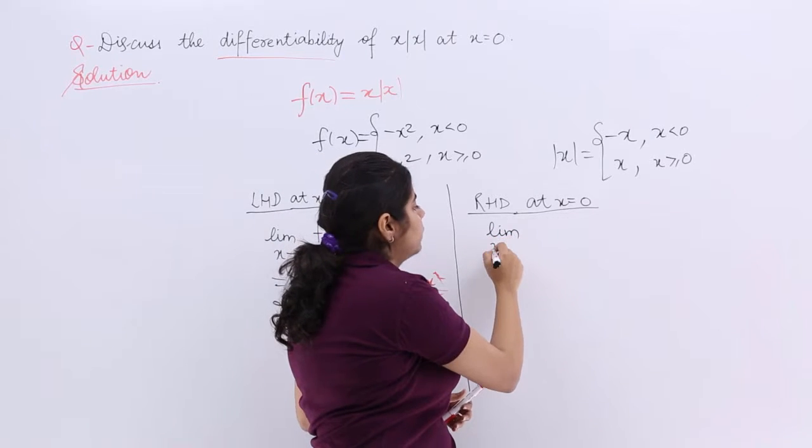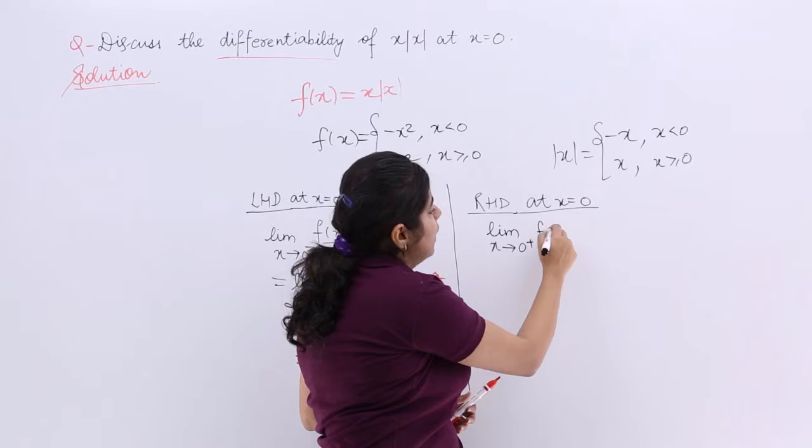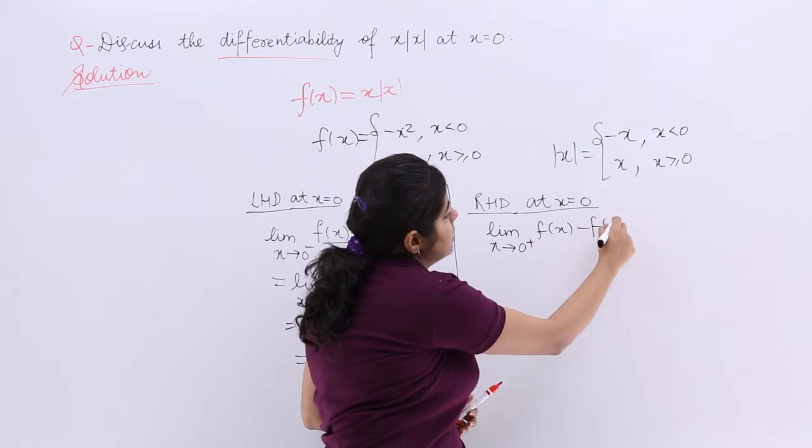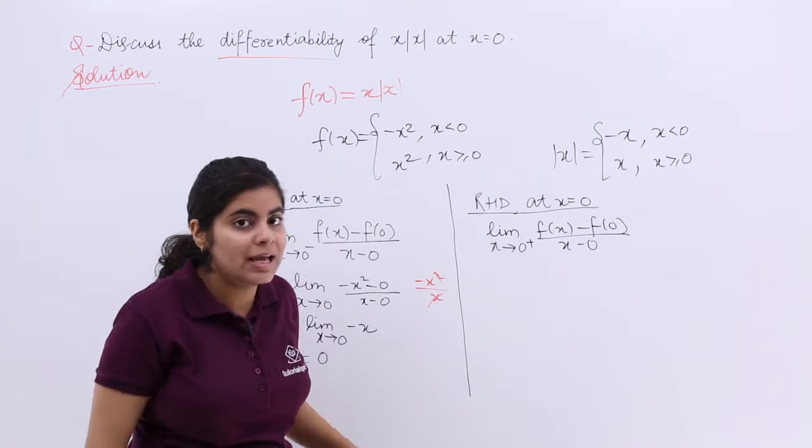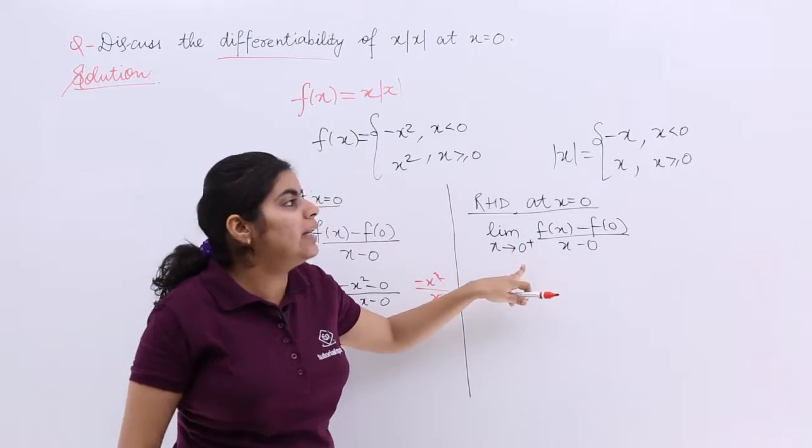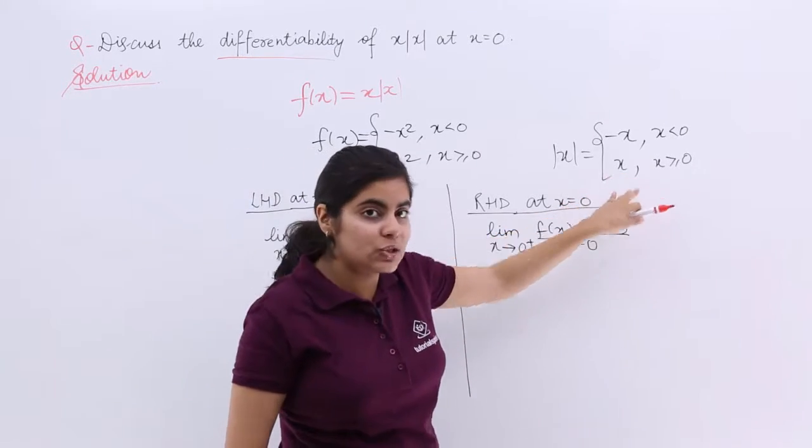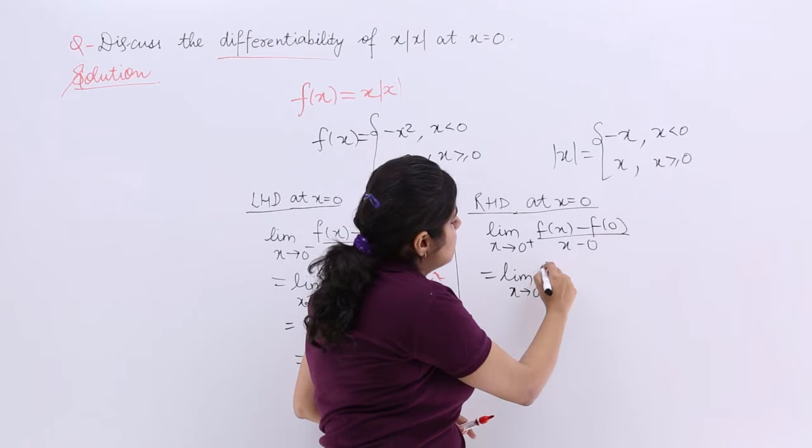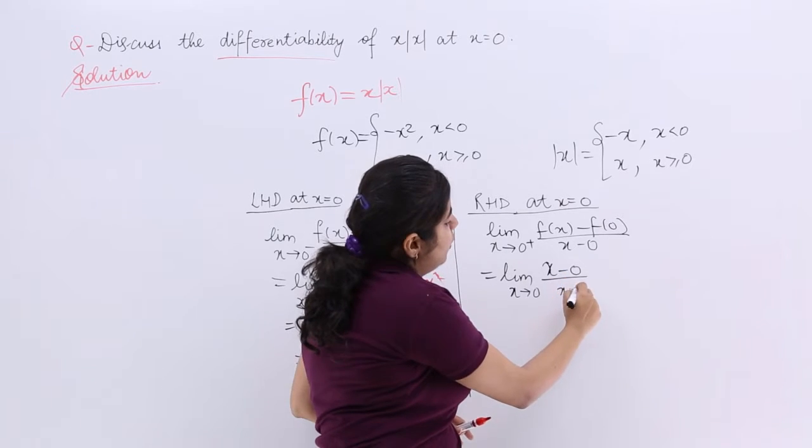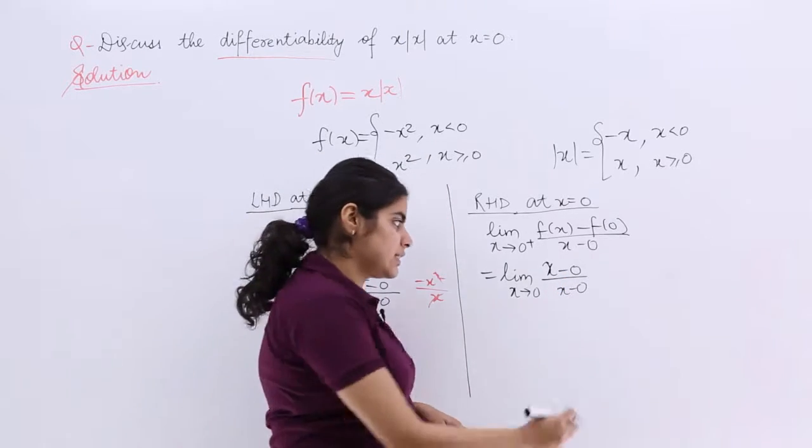Right hand derivative at x is equal to 0. So it is limit x tends to 0 positive. Again, the formula f of x minus f of a upon x minus a. This you might have learnt till now. Then, f(x) when x is greater than 0. That is x only. So I write here limit x tends to 0, x minus 0 upon x minus 0. How this has come? Let's see it again.